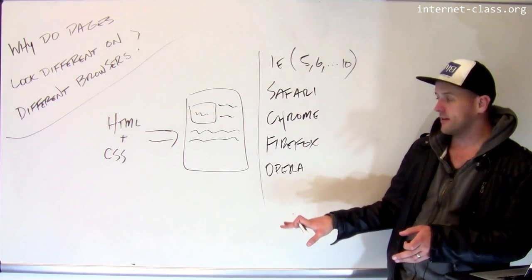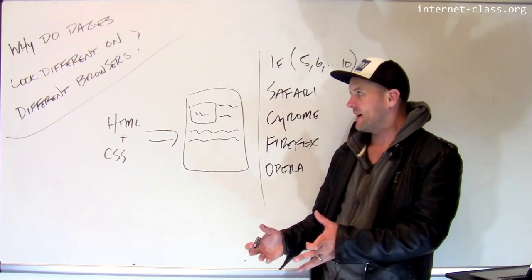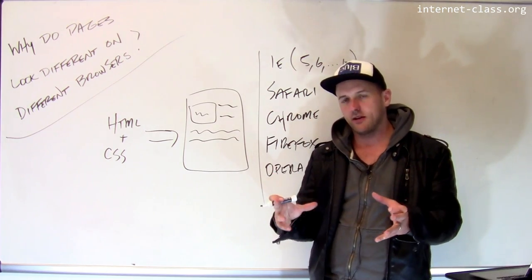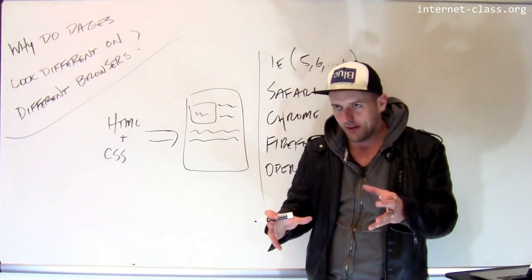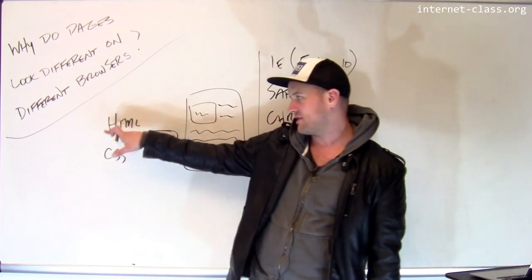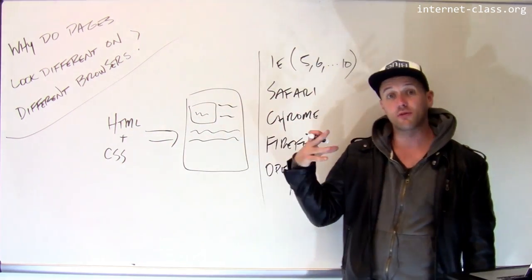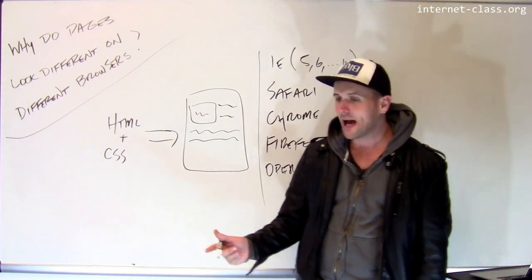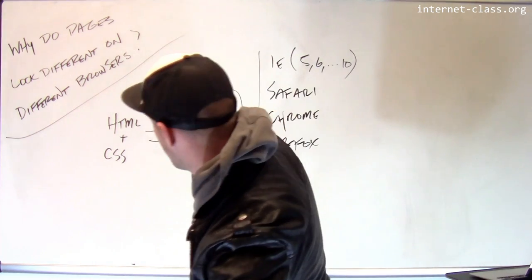People working on these projects read the standard, and they might have looked up a particular part of the standard and thought, how do I implement that? If I see a particular piece of HTML and CSS, how do I decide exactly how it's supposed to look on the page? Let me use an example here.